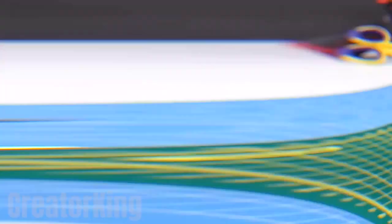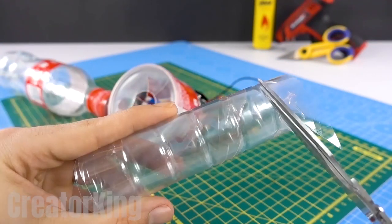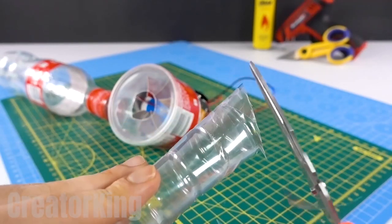With our plastic tube ready we'll need to make a diagonal cut on one of the ends and glue it to the remaining hole on our motor.